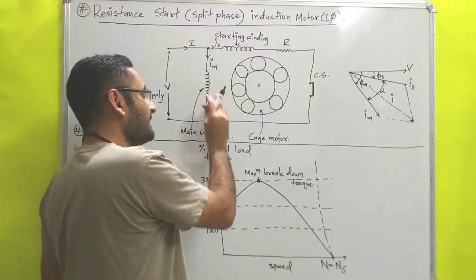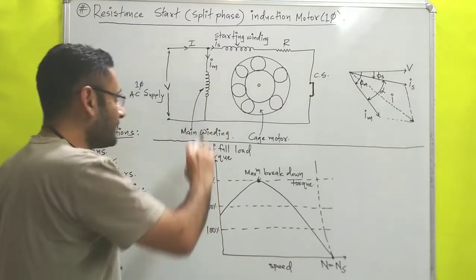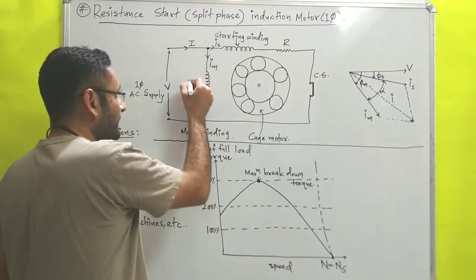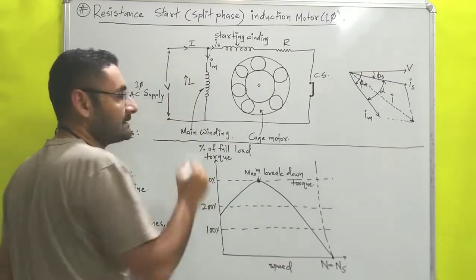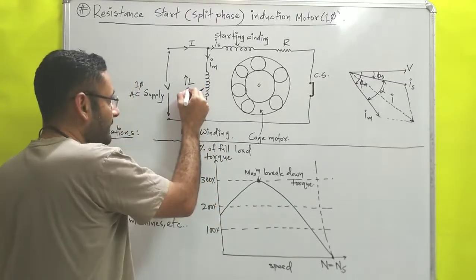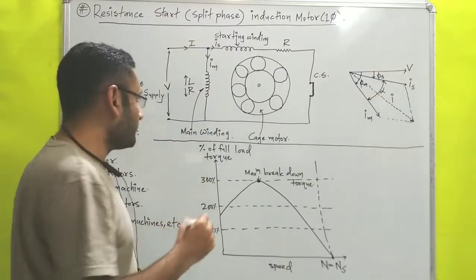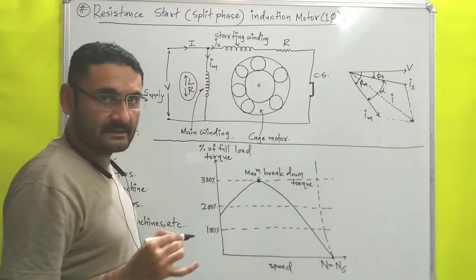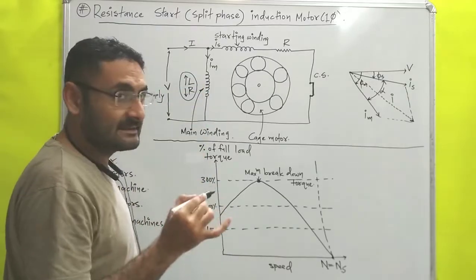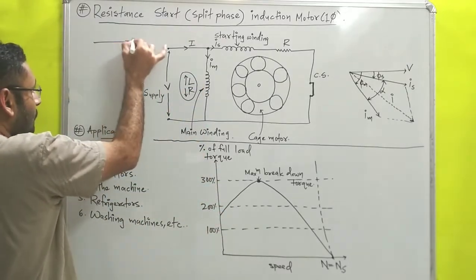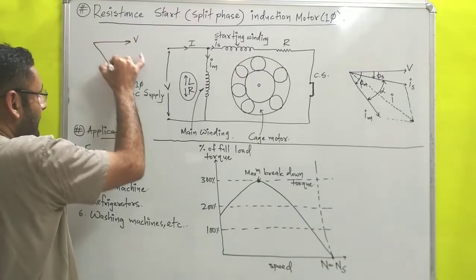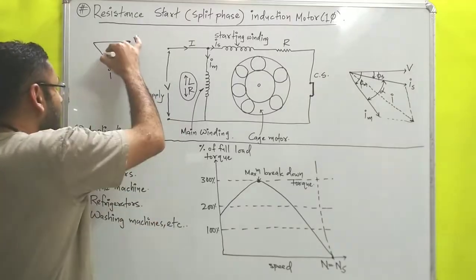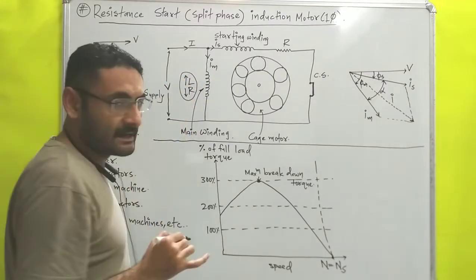The main winding is designed in such a way that it has high inductance L and low resistance. That means it behaves as a series LR circuit, and in a series LR circuit, as we know, whatever current flows will lag behind the potential — this we have already studied in series LR circuit.